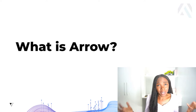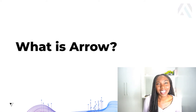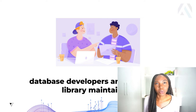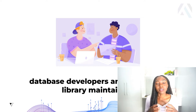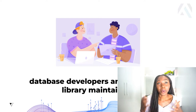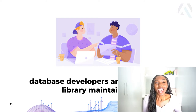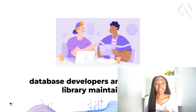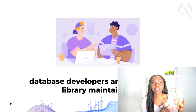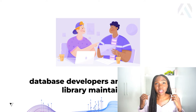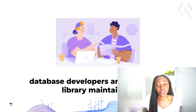The first and main question I will be addressing in my talk today is what exactly is Arrow. Arrow is actually relatively new. It was created in 2016 when a group of database developers and data frame library maintainers came together and realized that they were all trying to solve the same problems. These were not just Python developers or C++ or R programmers, but people from very different projects and different languages. This group decided to come together and create a shared solution to address the issues they were facing.